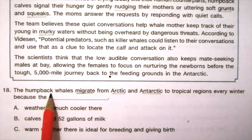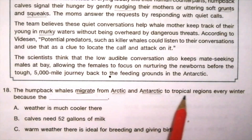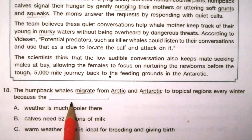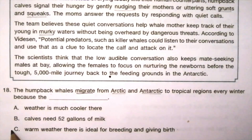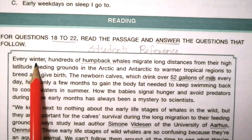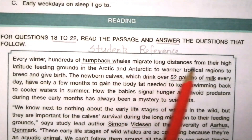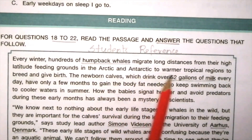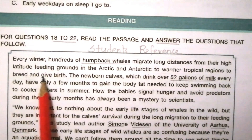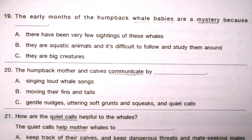Question 18: The humpback whales migrate from Arctic and Antarctic to tropical regions every winter because ___. Options: the weather is much cooler there, calves need 52 gallons of milk, warm weather there is ideal for breeding and giving birth. The answer is C — warm weather there is ideal for breeding and giving birth. The passage states they migrate to warmer tropical regions to breed and give birth.